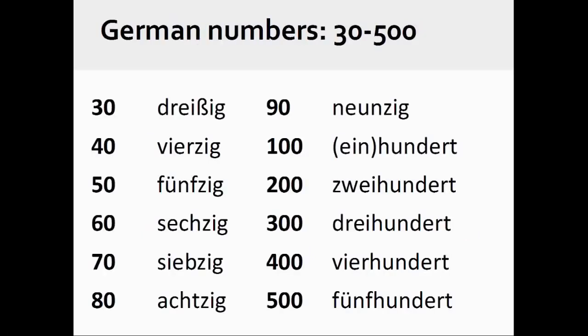The German numbers 30 through 500 are pronounced dreißig, vierzig, fünfzig, sechzig, siebzig, achtzig, neunzig, hundert, zweihundert, dreihundert, vierhundert, fünfhundert.